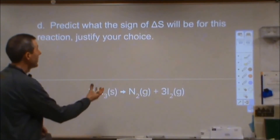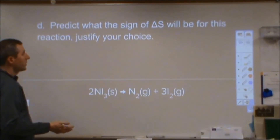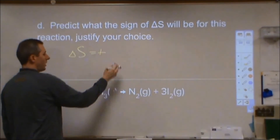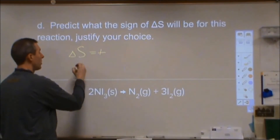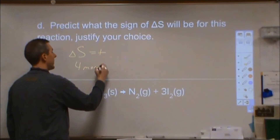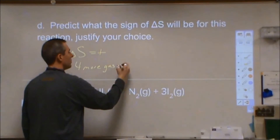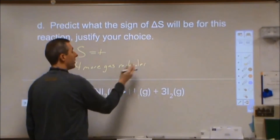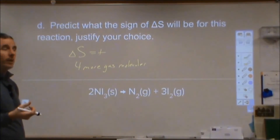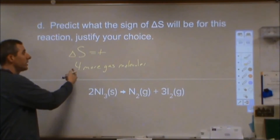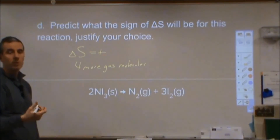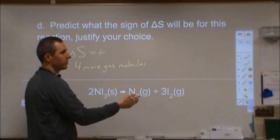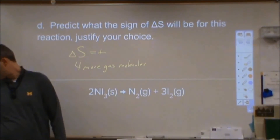Part D says: predict the sign of ΔS for this reaction and justify your choice. ΔS for this reaction is definitely going to be positive. We have four more gas molecules produced than consumed, and gas molecules have a particularly high entropy, so the entropy of the system increases due to a much larger dispersal of energy.